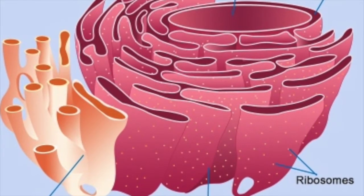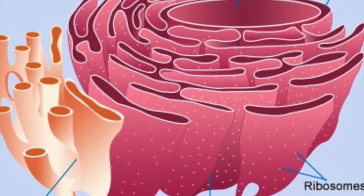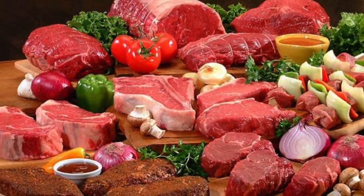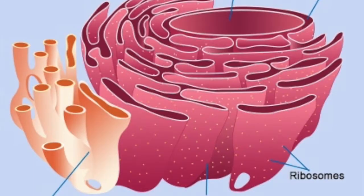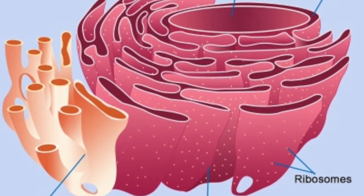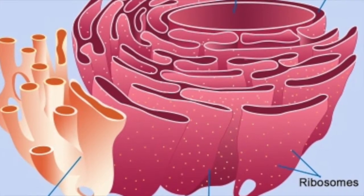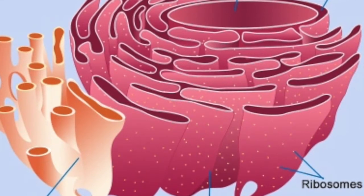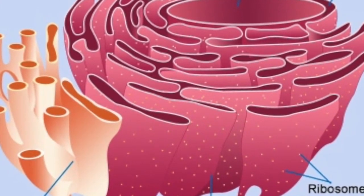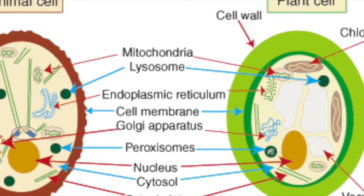Endoplasmic reticulum. The endoplasmic reticulum is the organelle that transports proteins. If the endoplasmic reticulum is smooth, there are not ribosomes on it. If the ER is rough, there are ribosomes on it. The endoplasmic reticulum is in all cells.